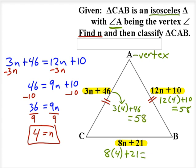Now the one that we're not exactly sure about is this base side length. 8 times 4 is 32 and 32 plus 21 is 53, and so that means this side length CB is not congruent to the other legs.